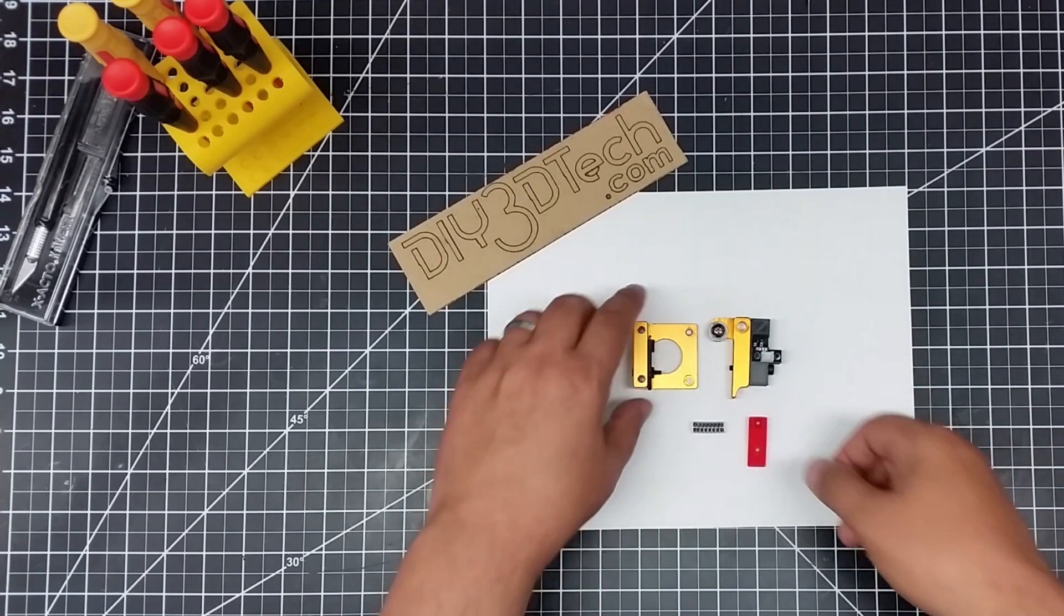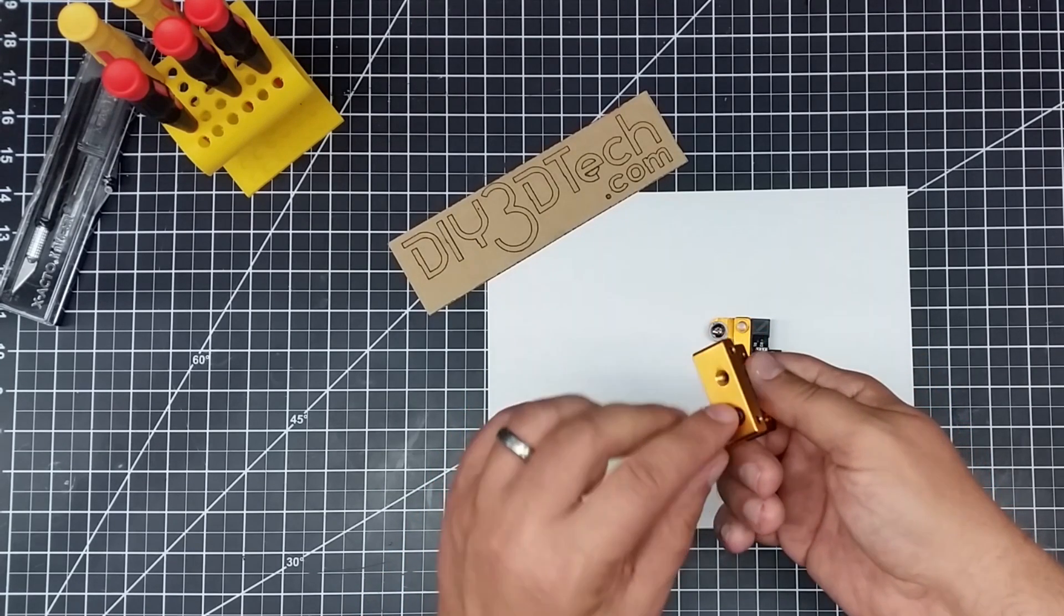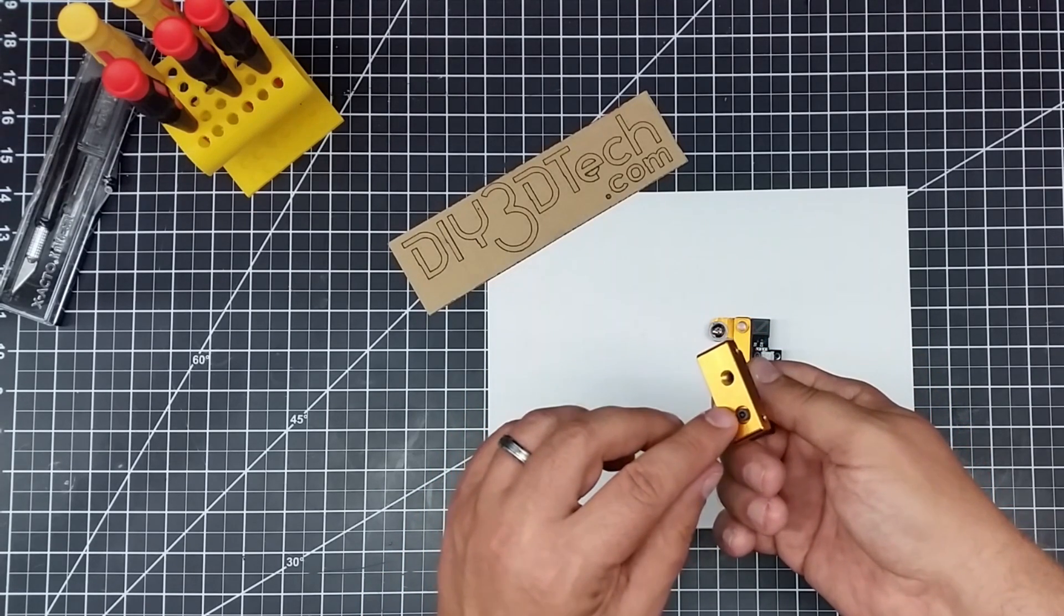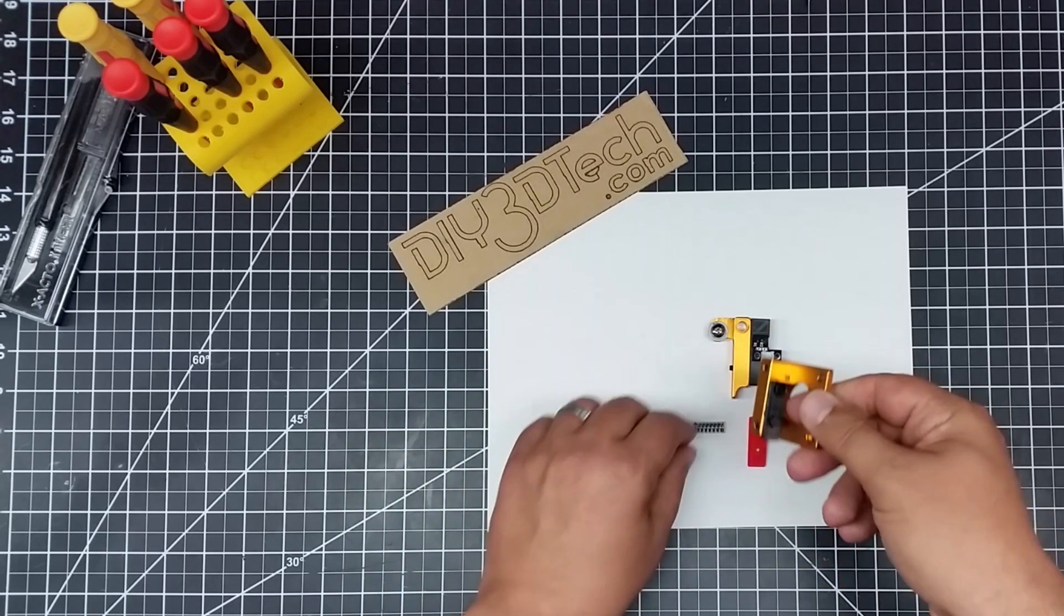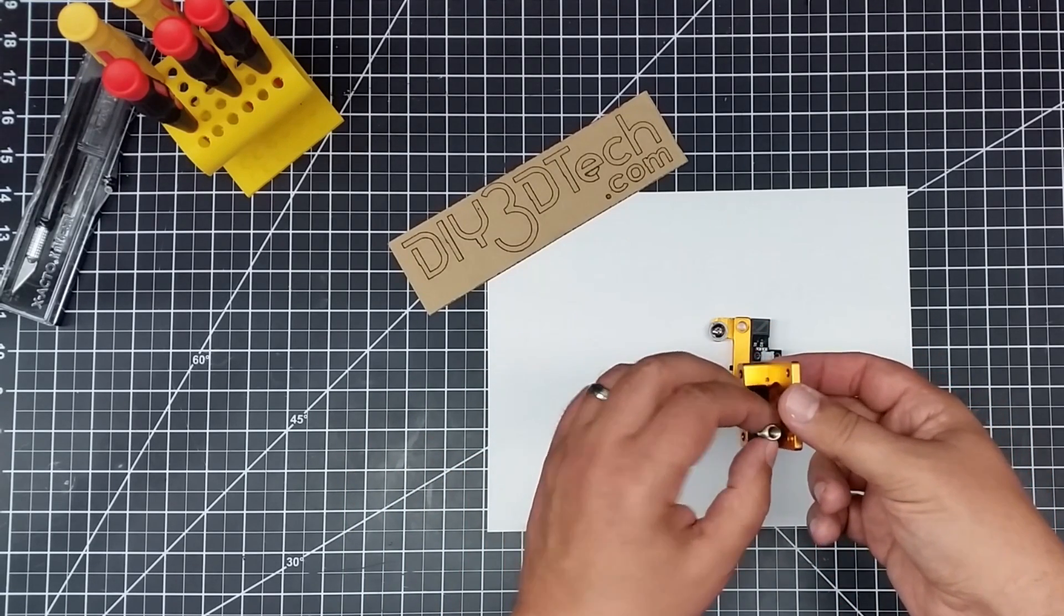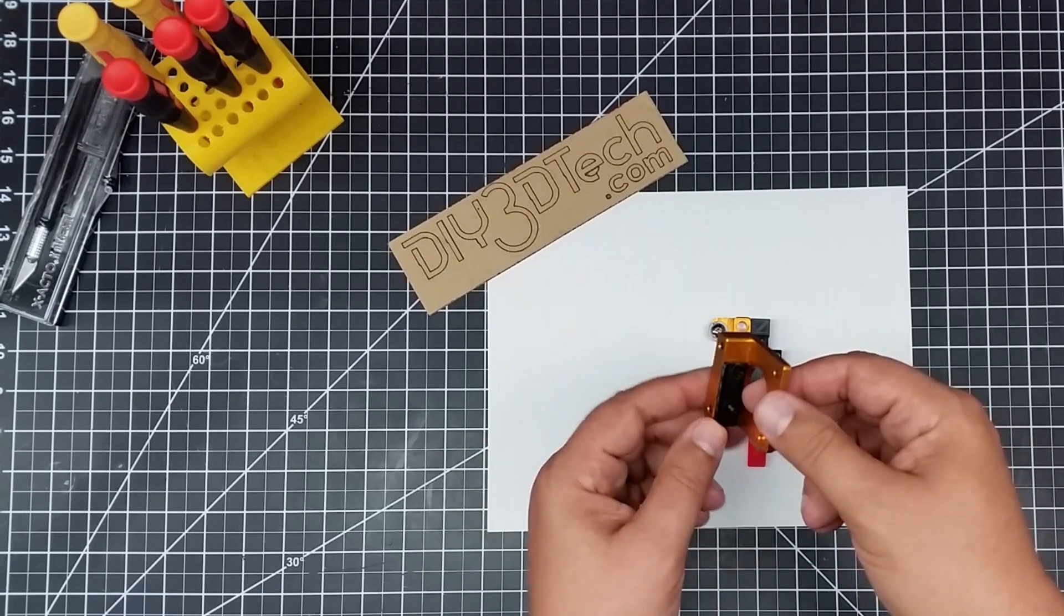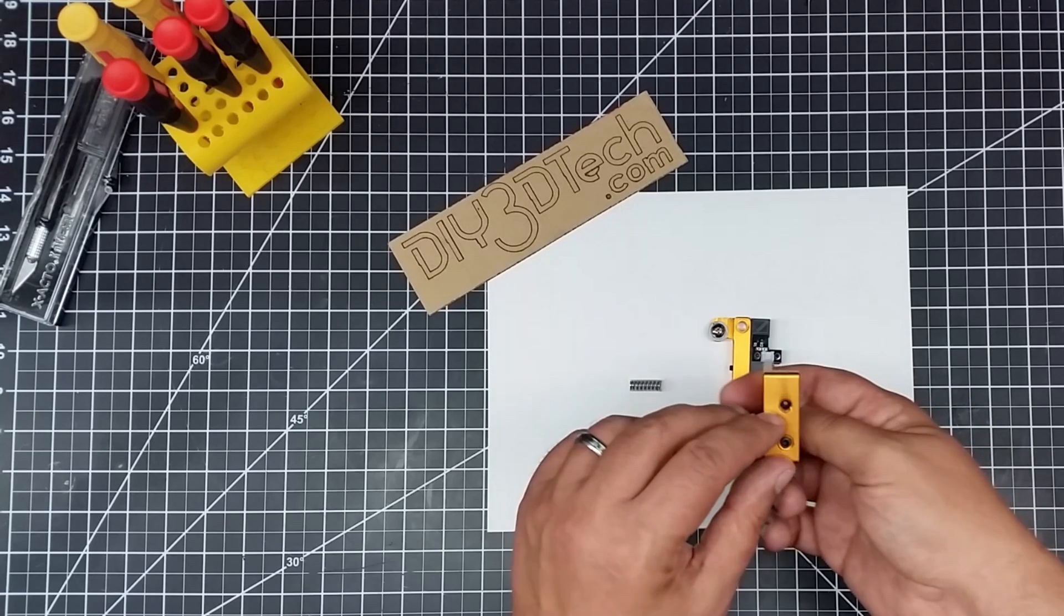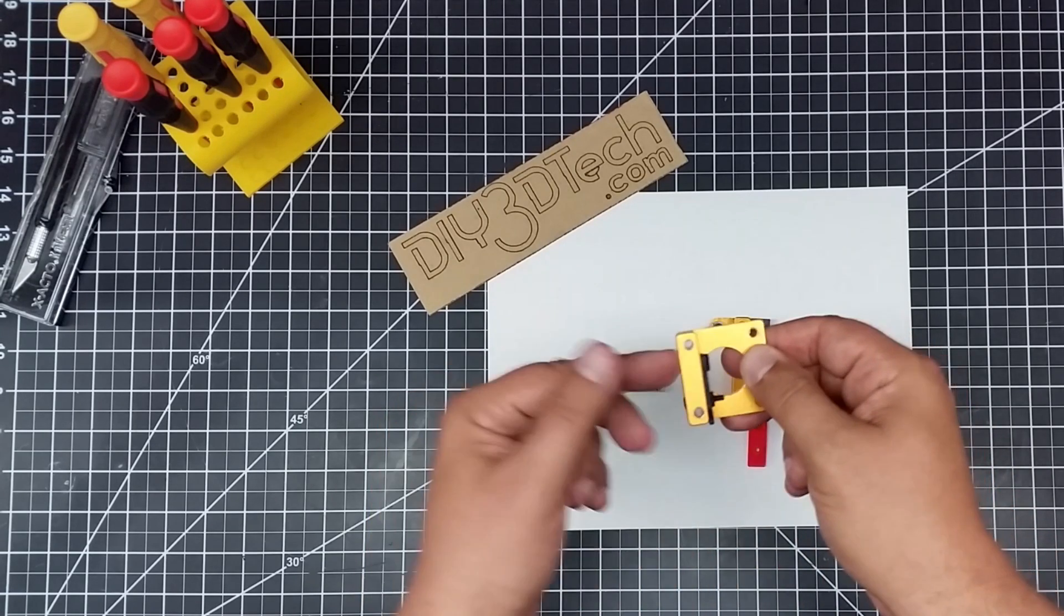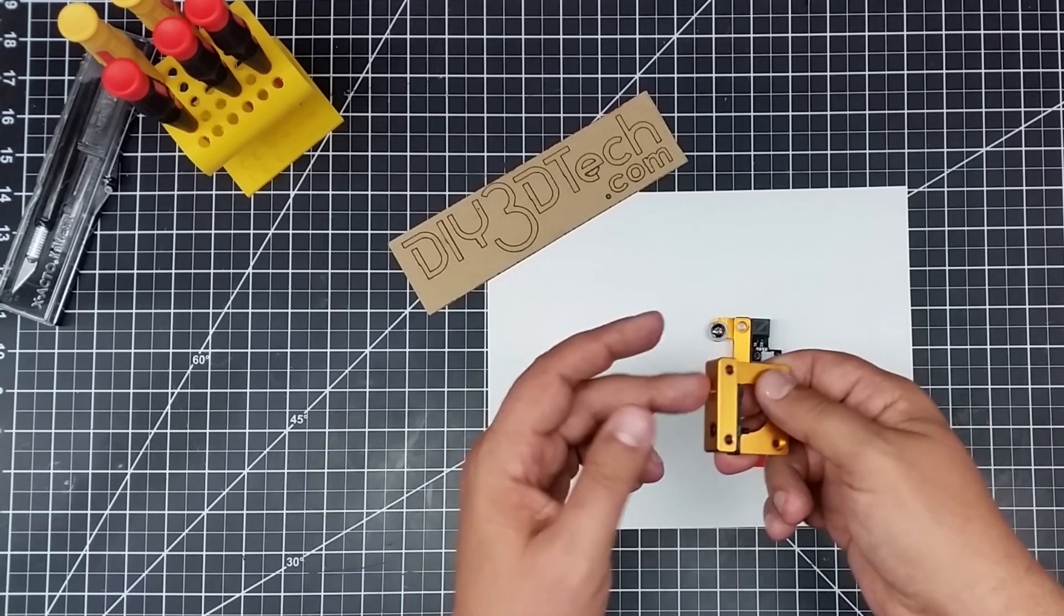Now what this does is replace this black piece here, which has the pressure screw for the spring that goes on here for the pinch wheel. And this also provides a sort of bushing down in here where the filament comes through, or actually comes out.